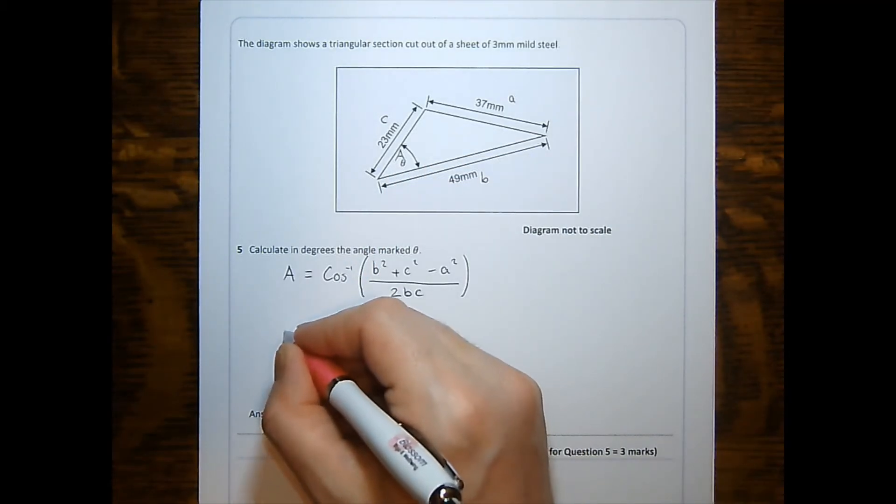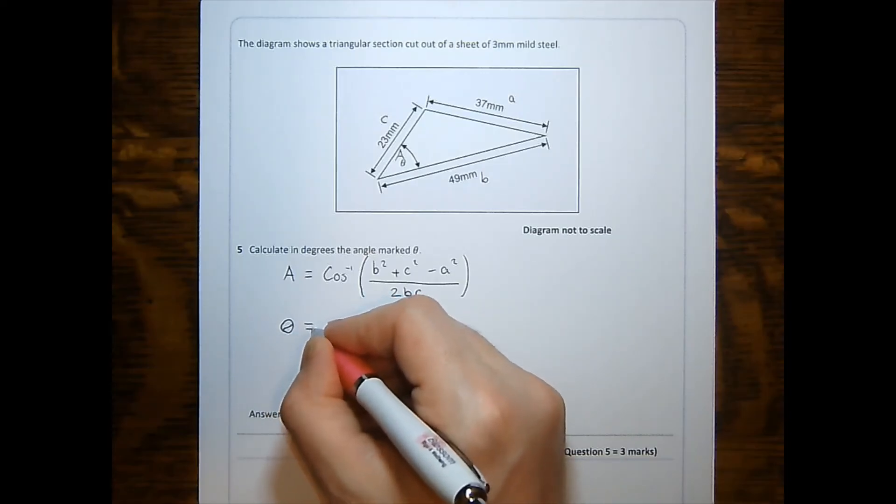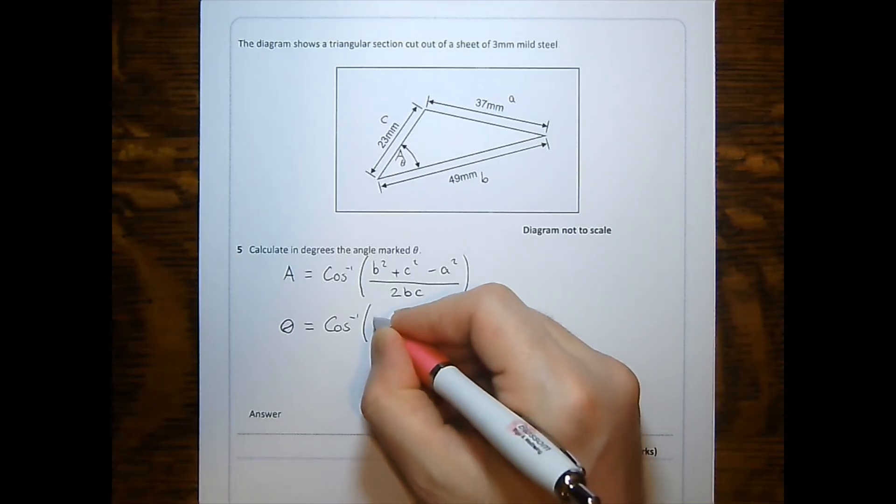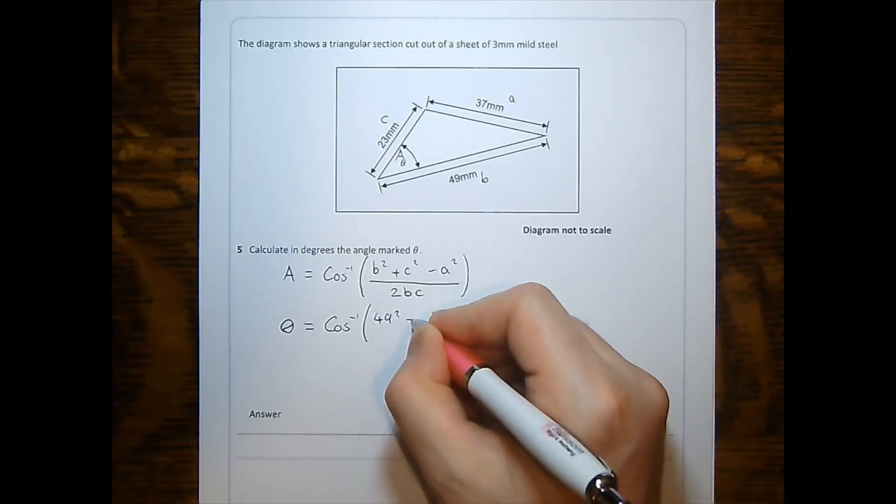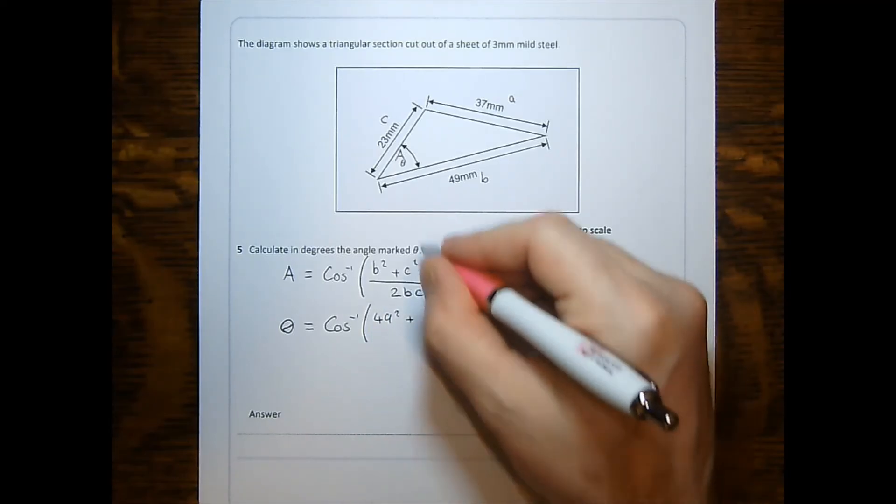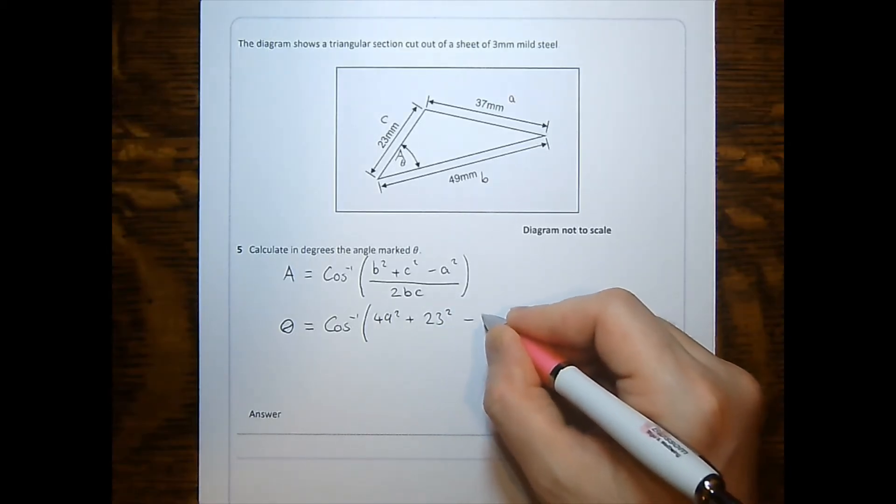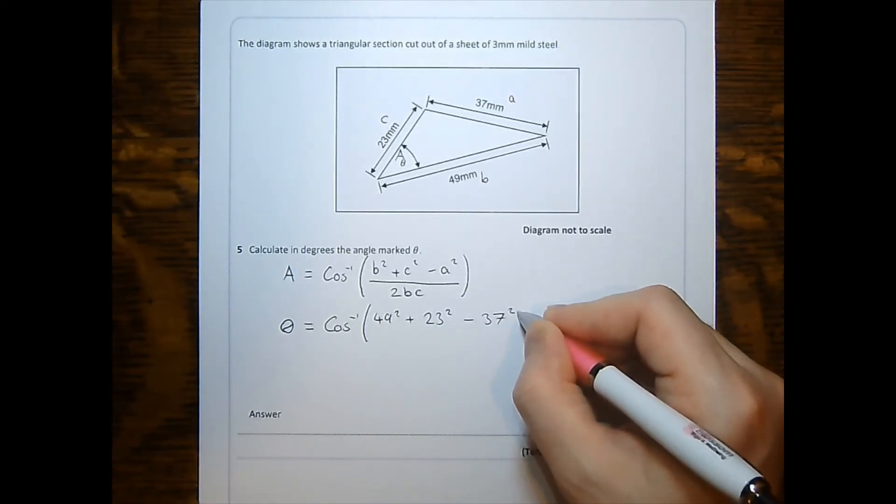Substituting, the angle is actually called theta in our case. Inverse cosine, b is 49 square it as the rule states, c is 23 again squared, and a is 37 again squared.